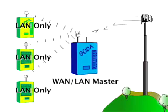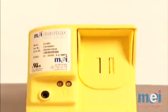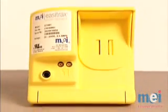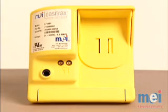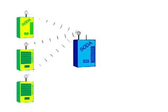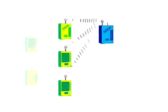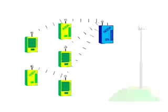The third configuration is the LAN-only, known as the satellite option. Use this for networking multi-machine sites in conjunction with the WAN-LAN configuration.